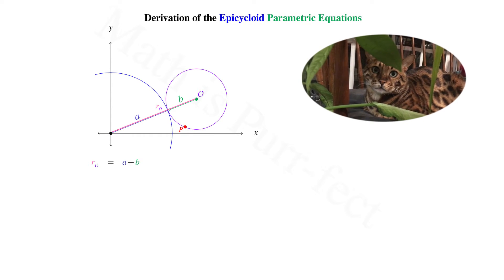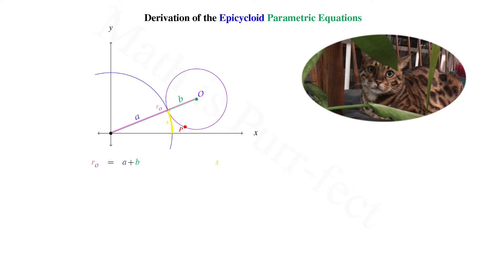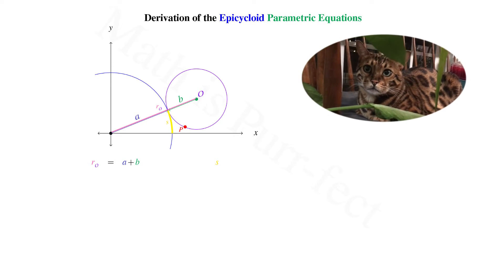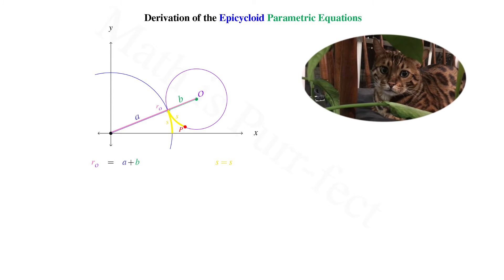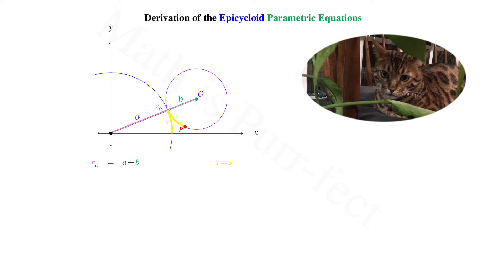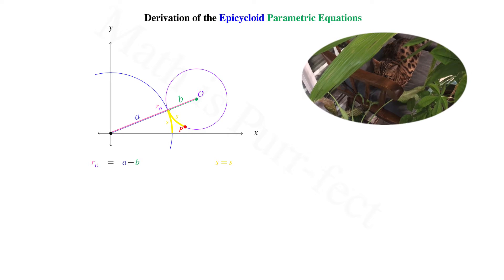Now let's look at the distance traveled along the circumference of each, that is the arc length S. It should be clear that the length traversed by the outer circle along the circumference of the inner is the same as the distance from point P along the outer circle to where the two circles touch. That is, the arc length of each is equivalent.